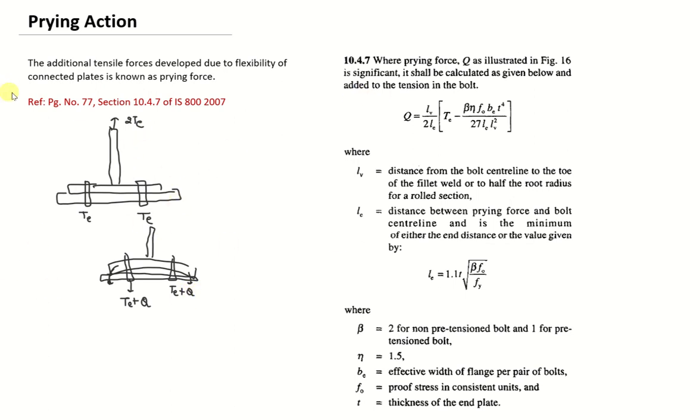So here this is mentioned in page number 77 in clause 10.4.7 of IS 800 2007. Here prying force is given by this expression. Q is LV by 2 times Le into TE minus beta eta F0 Be T power 4 by 27 Le LV squared. So finding these all parameters we can easily find out the prying force.